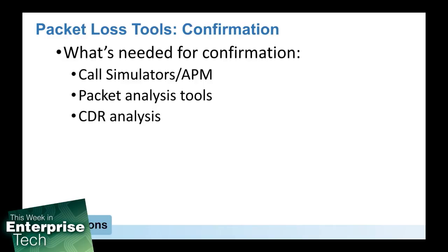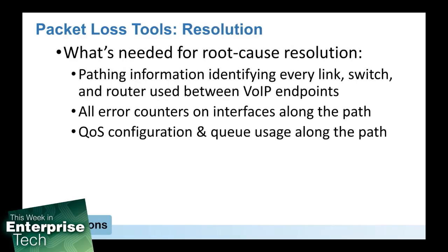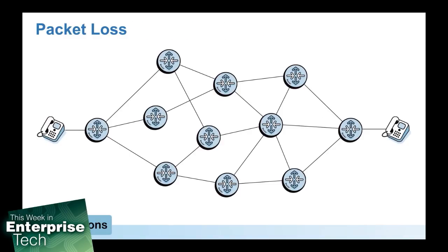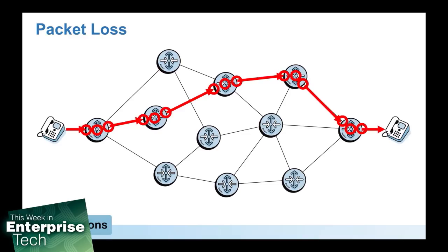To resolve the problem, pull out your network map and identify every link, switch, and router used between the two VoIP endpoints. Log into those switches and routers and check all the interfaces for error counters along the path. Investigate the QoS configuration. What you need to do is examine every interface and device for all error counters, CPU, memory, and health on every involved link, switch, and device.